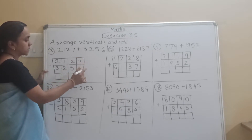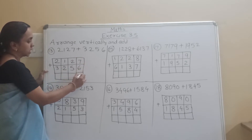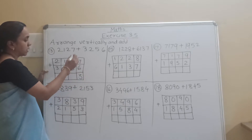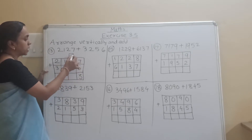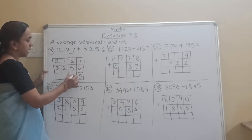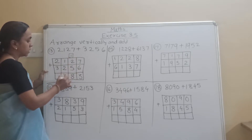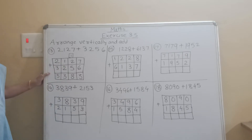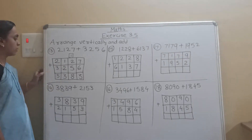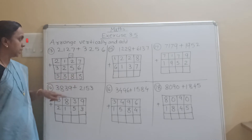For example, 2127 plus 3256. Write each digit in a separate box. So 7 plus 6 is 13, carry 1. Then 2 plus 1 is 3, 3 plus 5 is 8. Then 2 plus 1 is 3, 3 plus 2 is 5. So our answer is 5383.